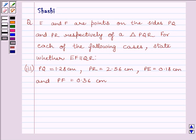Hello students and welcome to the session. Let us discuss the following problem. E and F are points on the sides PQ and PR respectively of a triangle PQR. For each of the following cases, state whether EF is parallel to QR.